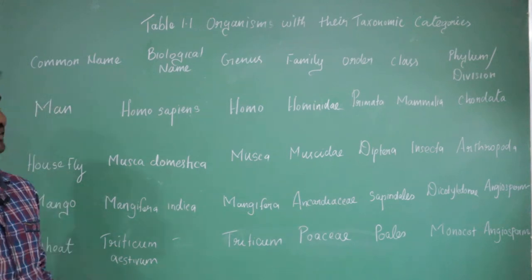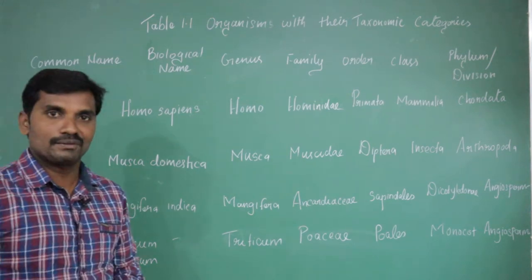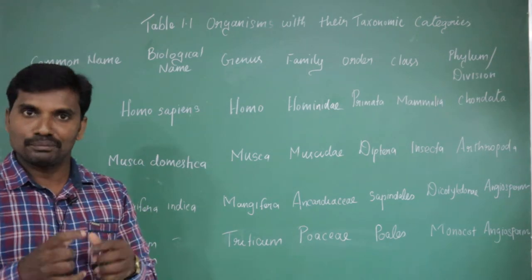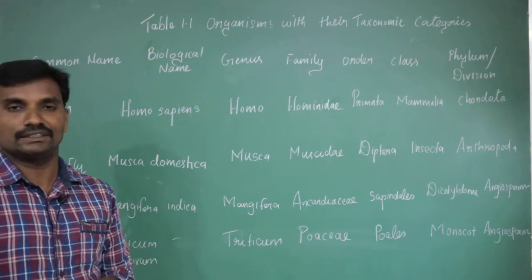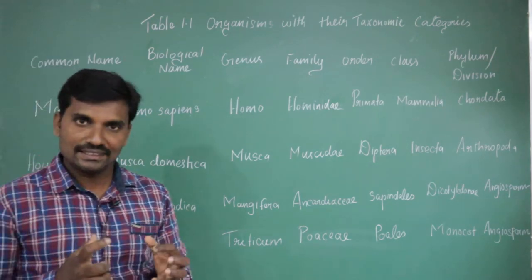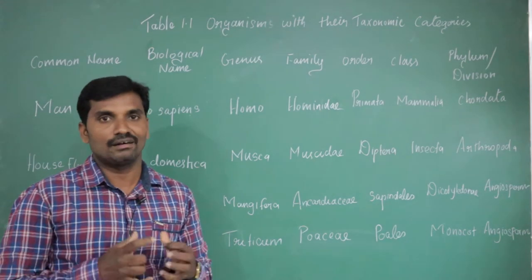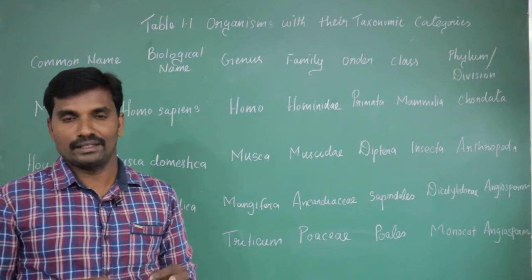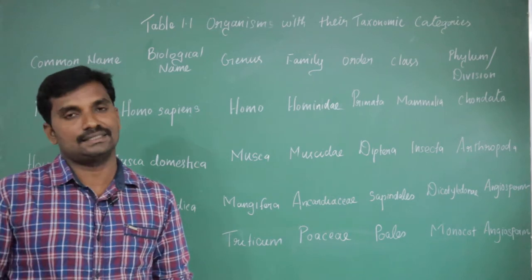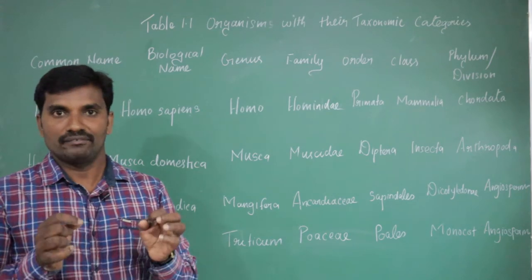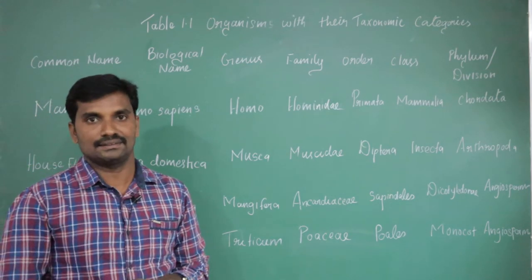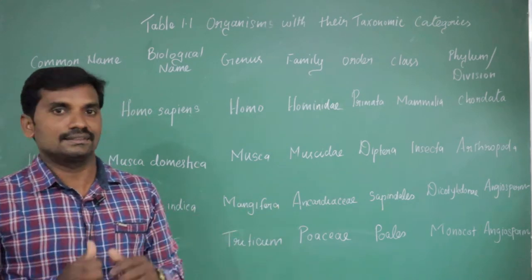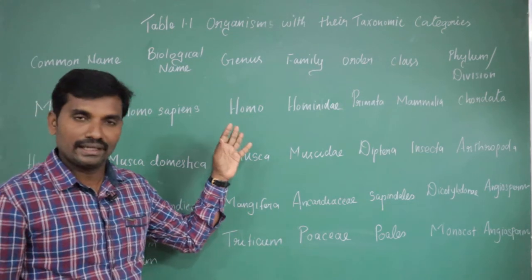Hi students, in the last class we covered that there are 7 different taxonomical characters. There are important characters which are species, genus, family, order, etc. The group of related species which have some common characters is called the genus. There are 7 different categories of taxonomical hierarchy.